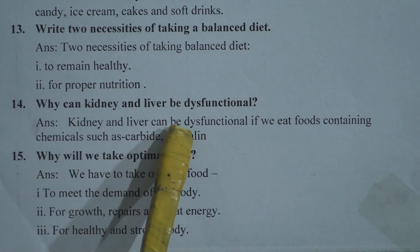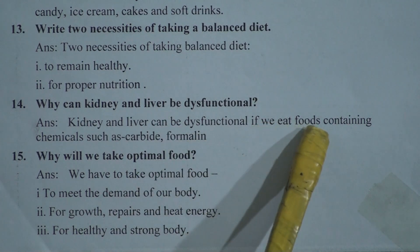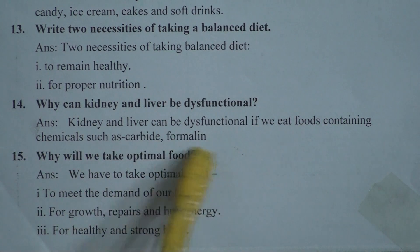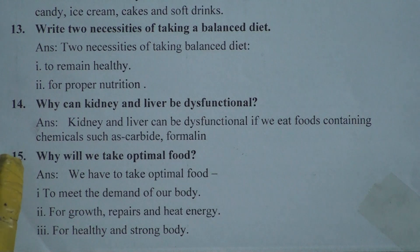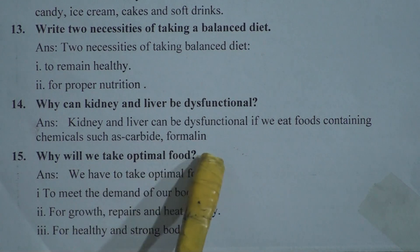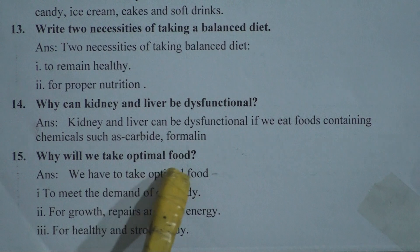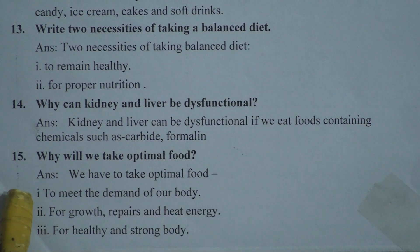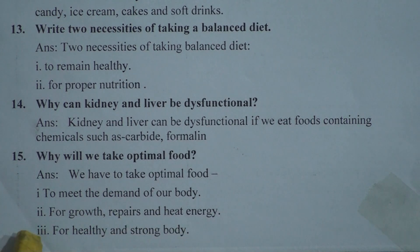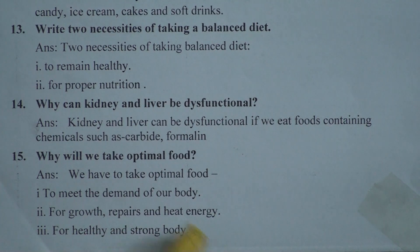Question 14: Why can the kidney and liver become dysfunctional? Answer: The kidney and liver can become dysfunctional if we eat food containing chemicals such as carbide and formalin. Question 15: Why do we take optimal food? Answer: We have to take optimal food — to meet the demands of our body, for growth, repair, and heat energy, and for a healthy and strong body.